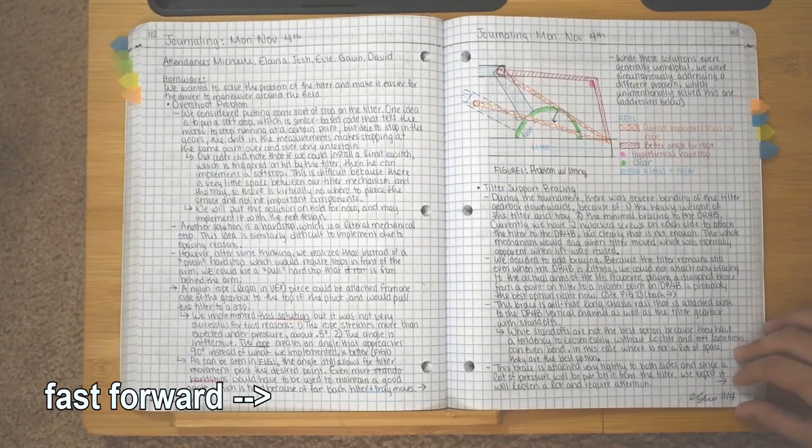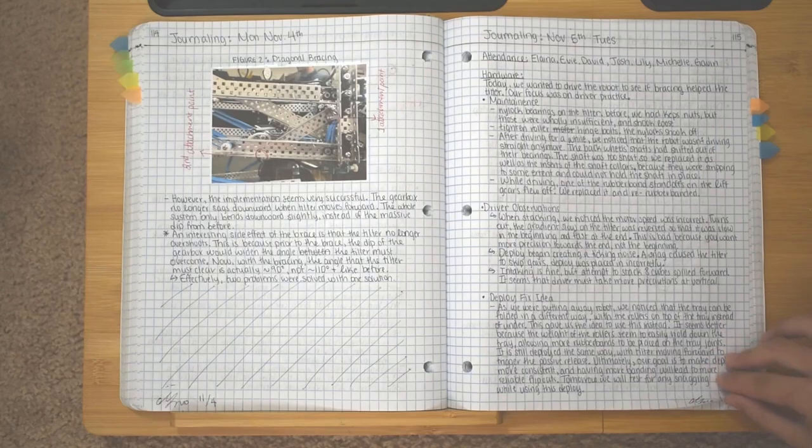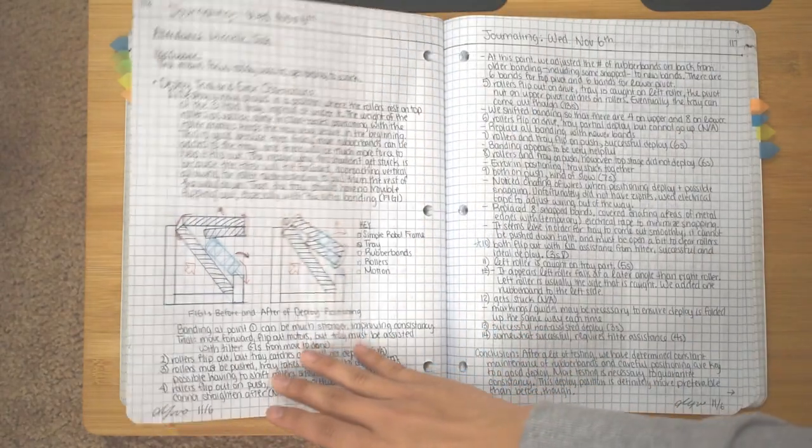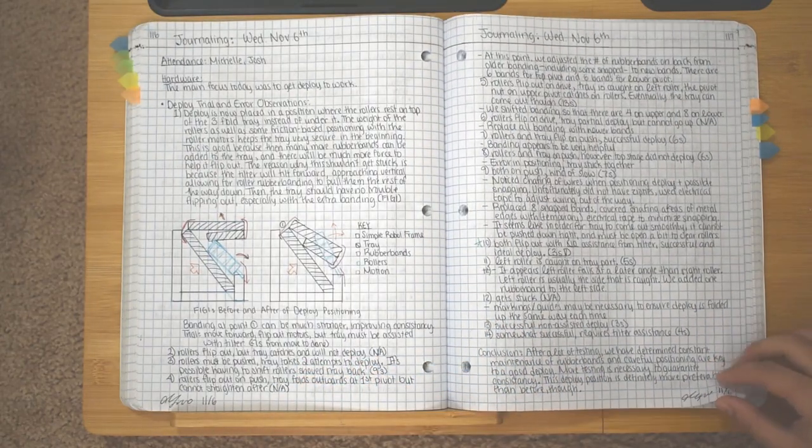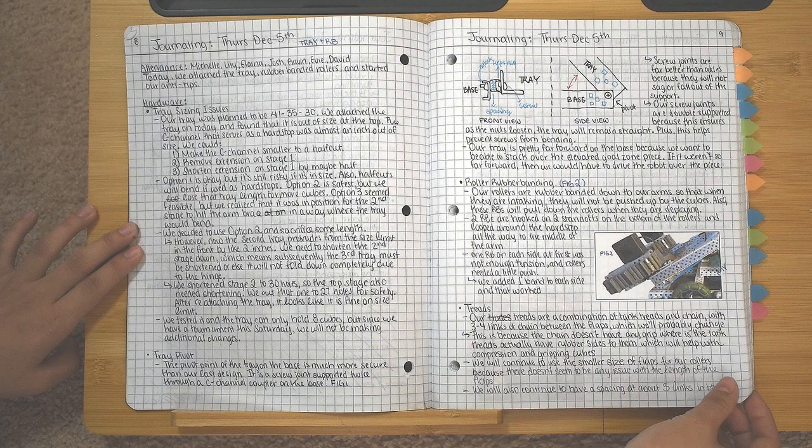However, in the later entries, such as these on maybe page 70, by now we had improved our entries so that they really demonstrate to the judges that we understand what we are doing. Here is a good example of an effective journal entry.